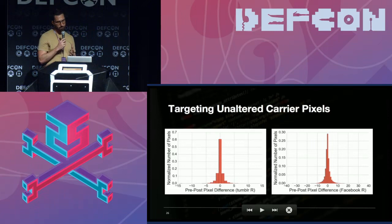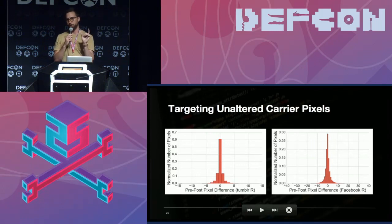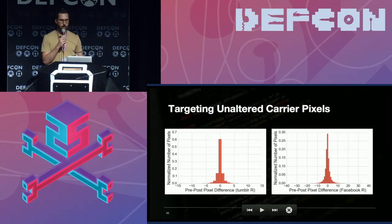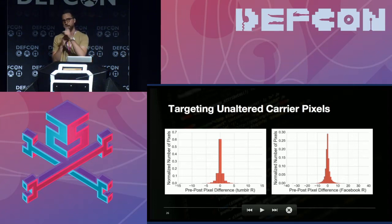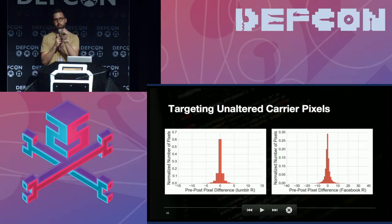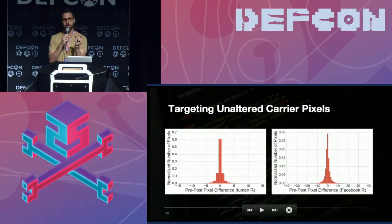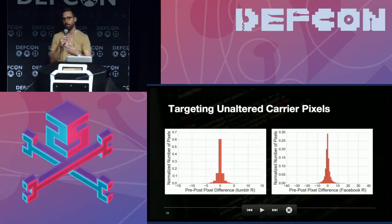This is a fundamental figure I'll talk about for a few minutes. When you take an image, implant it with a hidden message, upload it to the social network and download it, you have two images: pre-uploaded and downloaded. We looked at what was actually happening to individual pixels as they transited through social networks. This is a pre-post pixel difference histogram — comparing pixel to pixel the pre-uploaded and downloaded image — what is the difference in RGB value? The peak for both Tumblr, Facebook, Twitter, and other networks was centered at zero, meaning the majority of pixels aren't changing. Even with compression, we might be able to predict which pixels aren't changing in advance.